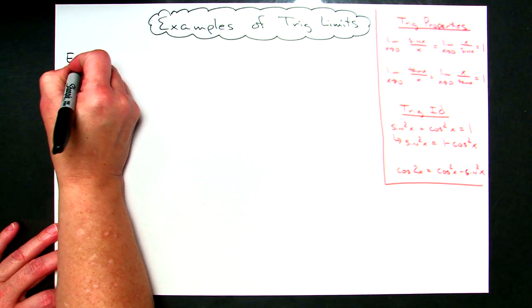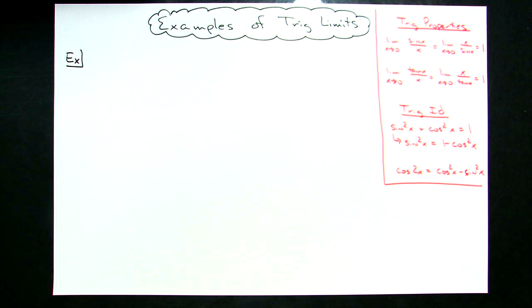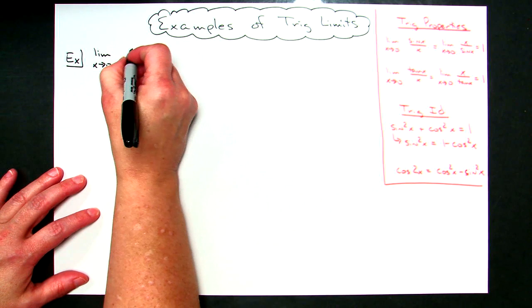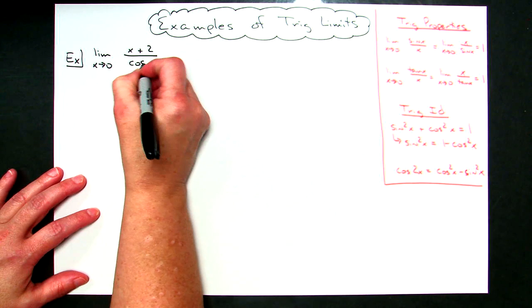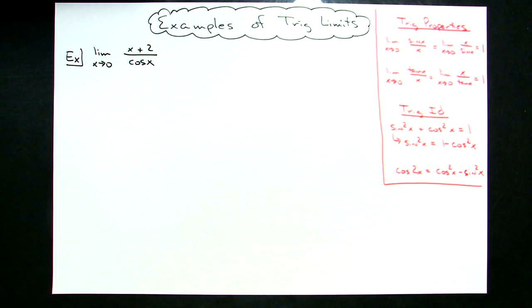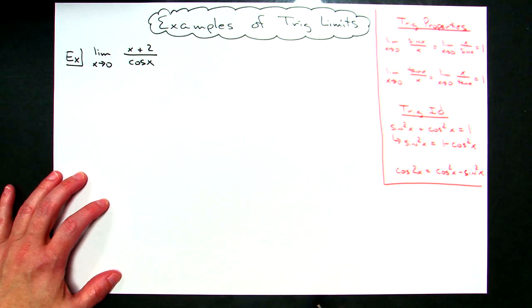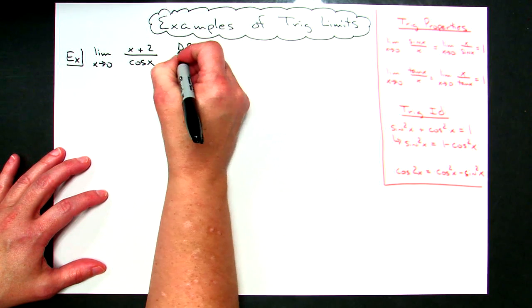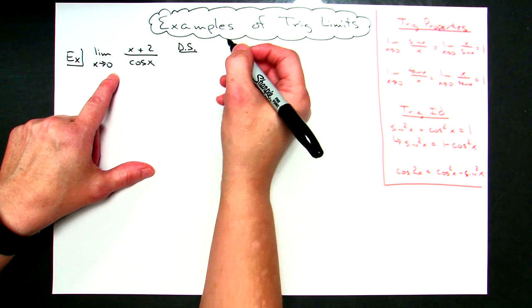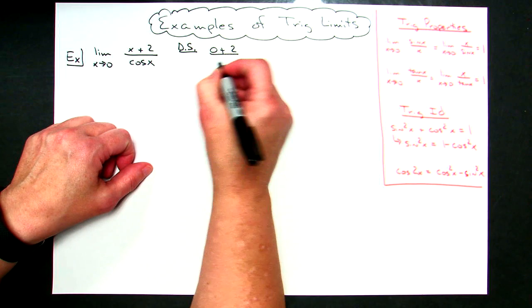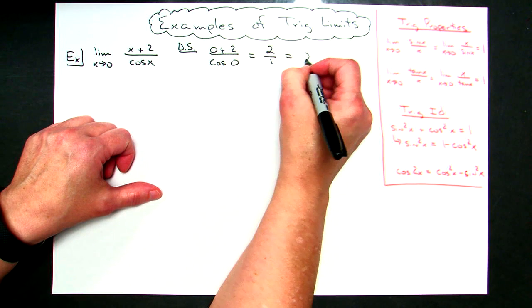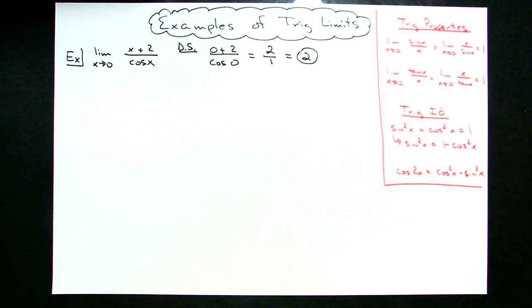For our first example, I want to do one that's kind of straightforward: the limit as x approaches 0 of (x + 2) all over cosine x. Looking at that, I'm not going to come up with anything using sine x over x or tangent. You always want to try direct substitution first. If I plug in 0 for x, I get 0 plus 2 over cosine of 0. The numerator is 2, the denominator cosine of 0 is 1, giving us 2. Direct substitution works out really nicely here.